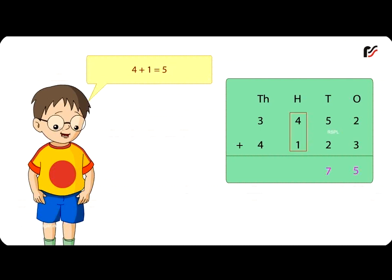Next add 100's. 4 plus 1 is equal to 5. Write 5 under 100's column.